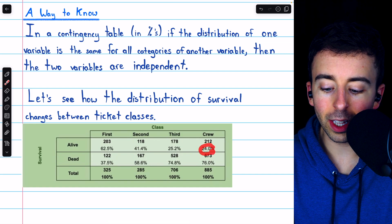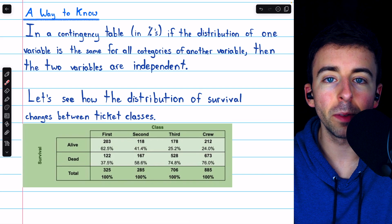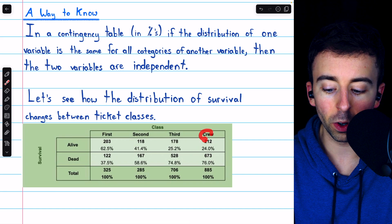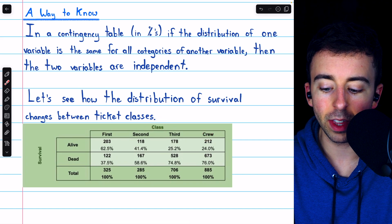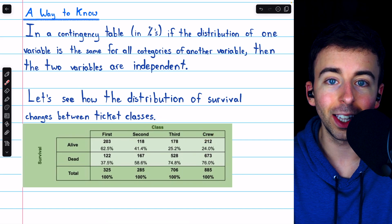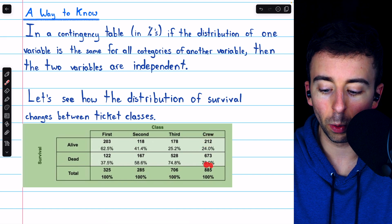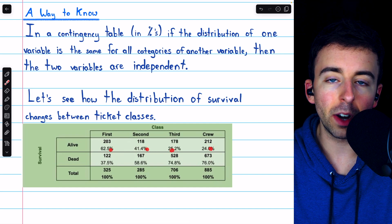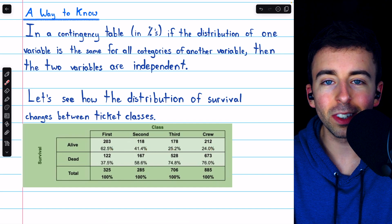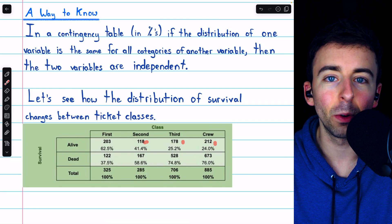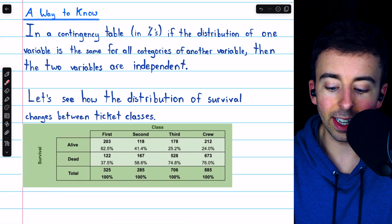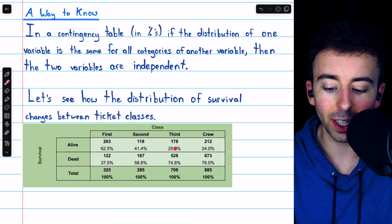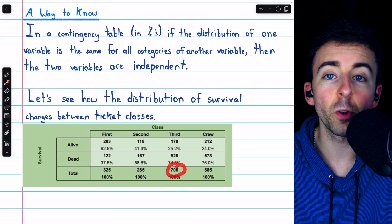You also have to make sure you're calculating these percents contingent on a variable's value. So 212 is 24% of the crew. We're fixing the class variable to have the crew value to calculate that percent. So it's 212 over the total crew, which is 885. If we calculated these percentages by dividing by the total number of people, those percents would be no more helpful than these raw counts are. Instead, we see contingent on the fact you're in the third class, there was a 25.2% chance you survived. To calculate that number, we use 706 as the total.